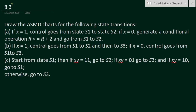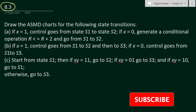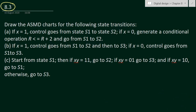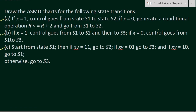In this video we will solve problem number 8.3 from chapter number 8. The problem is: draw the ASMD chart — algorithmic state machine and datapath chart — for the following state transitions. We are given three conditions, A, B, and C, so we will have three ASMD charts. Let us solve them one by one.